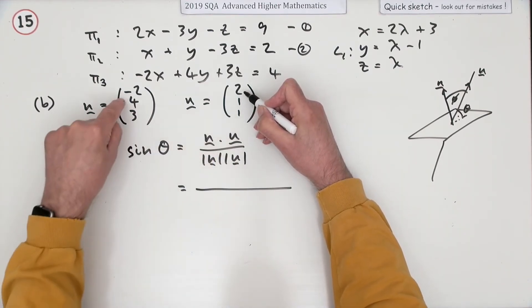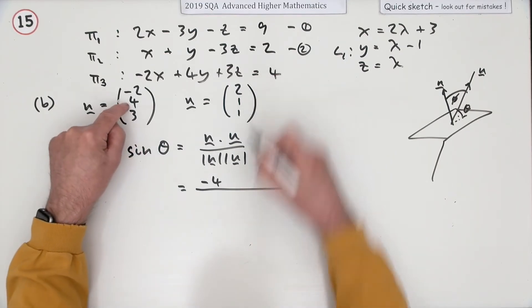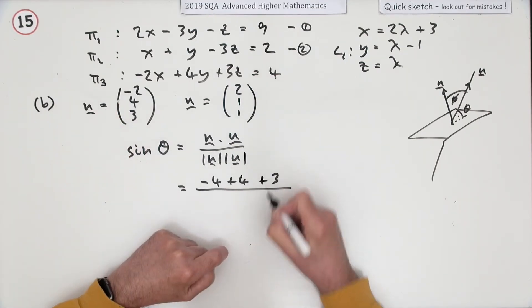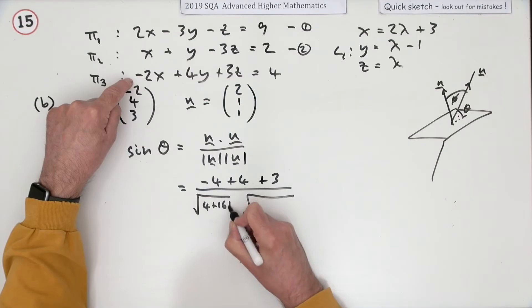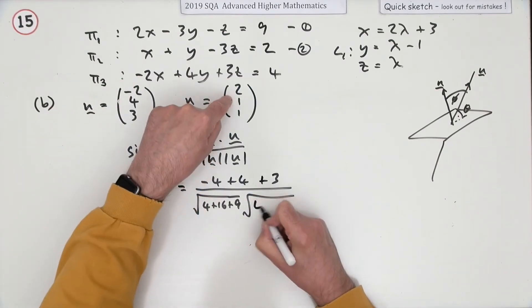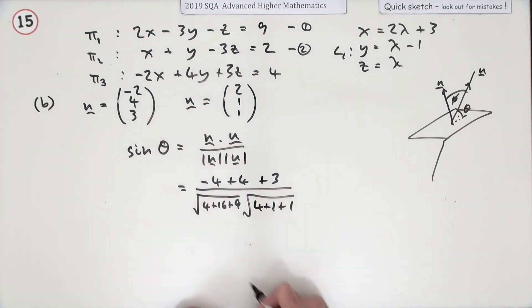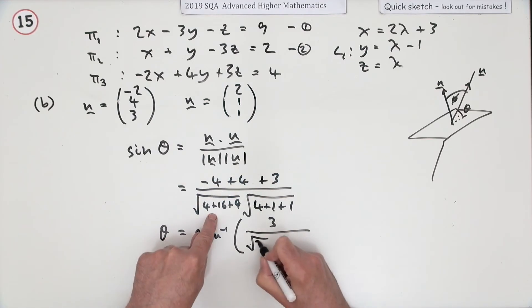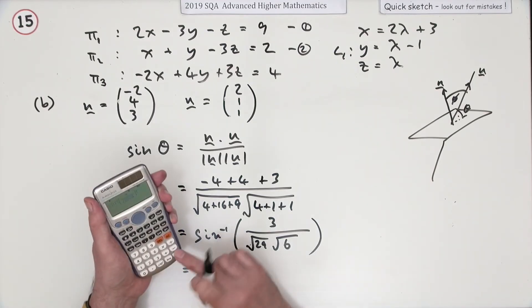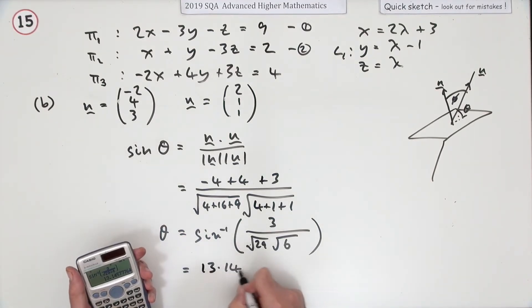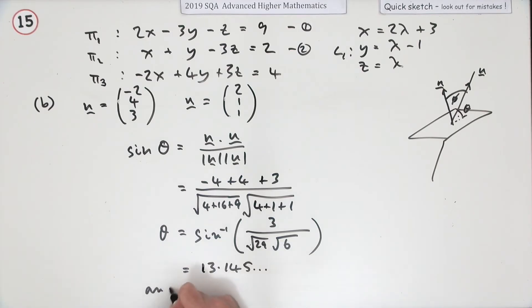You've got a scalar product. Negative 2 times 2, negative 4, plus 4, and then plus 3. Magnitudes. Magnitude of this one: 4 plus 16 plus 9. Magnitude of this one: 4 plus 1 plus 1. Which means the angle you require will be inverse sine of, that comes to 3 on top, and that's root 29, root 6. And when you press the buttons, you get 13.145 and so on. Which means the angle you require is 13.1 degrees.